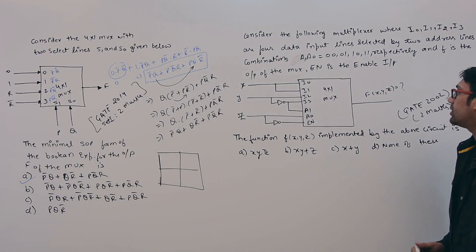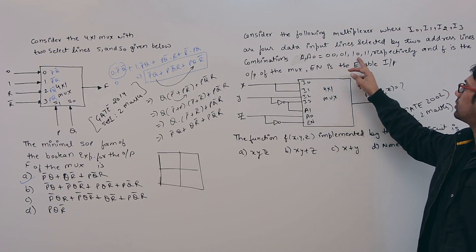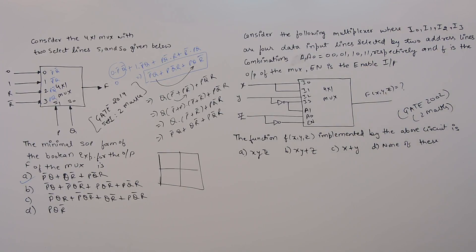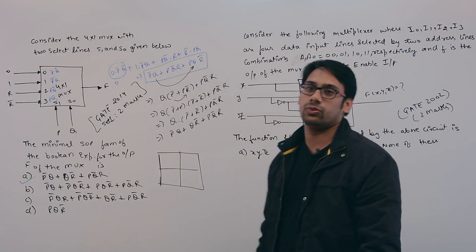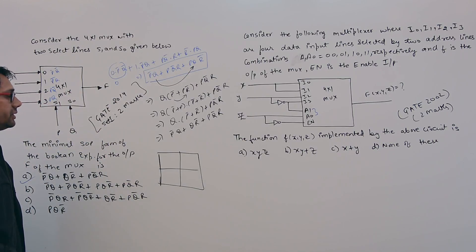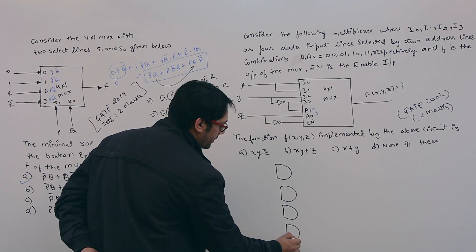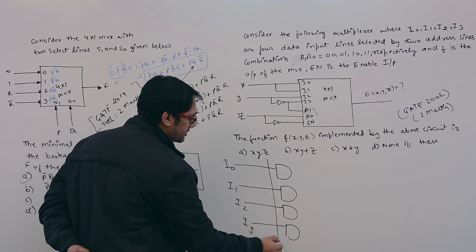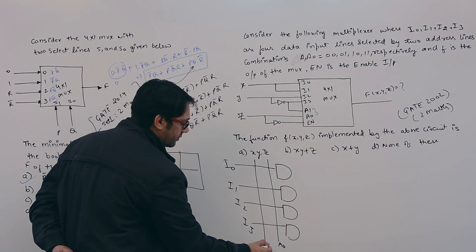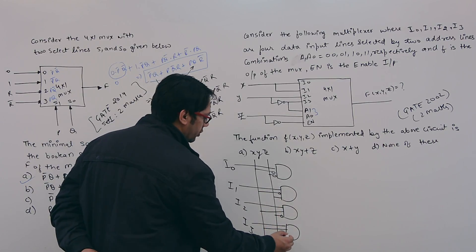The second question asks: consider the following multiplexer having I0, I1, I2, and I3 as four data input lines, selected by two address line combinations A0 and A1. The values of A0 and A1 can be 00, 01, 10, or 11 respectively. F is the output and EN is the enable input. They ask what function is implemented by the circuit.